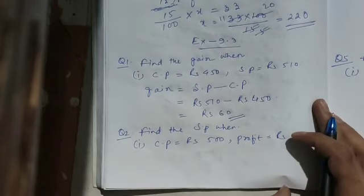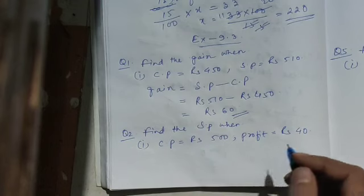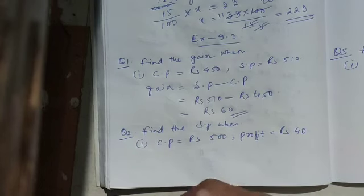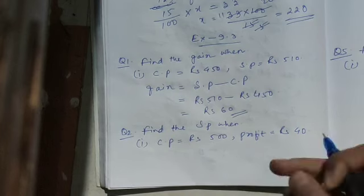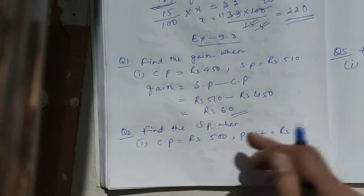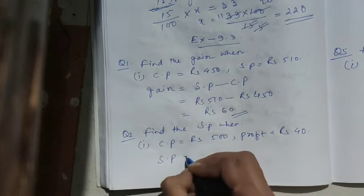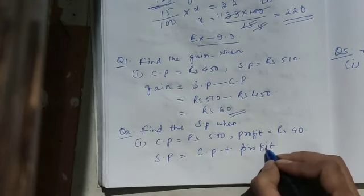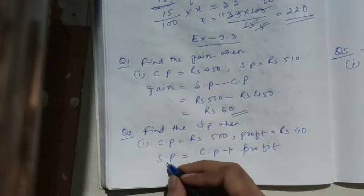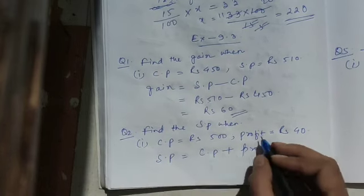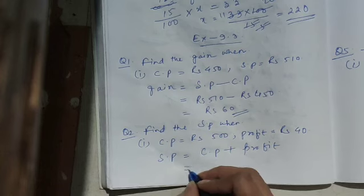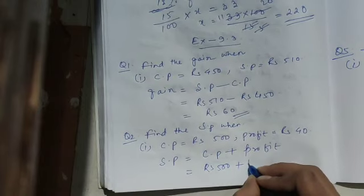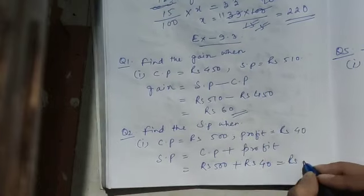Question number 2: find the SP when CP is 500 and profit is 40. When there is profit, selling price is more. To find SP in case of profit: SP equals CP plus profit. If it is a loss, SP equals CP minus loss. So here SP equals 500 plus 40, which is rupees 540.